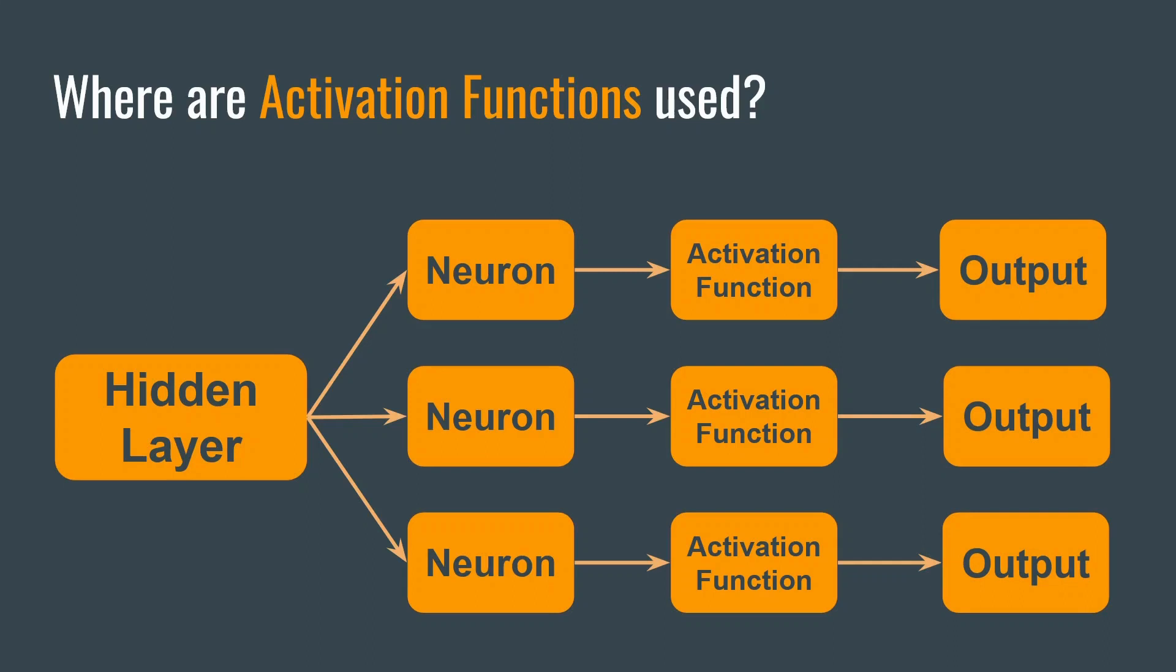The choice of the activation function on the output layer depends upon the range of values you want to output. Whereas the choice of activation function for the hidden layer depends upon what kind of nature you want from your model. If you do not choose any activation function, then by default it will behave linearly. An activation function also decides how the gradient descent algorithm is going to converge to the final solution.